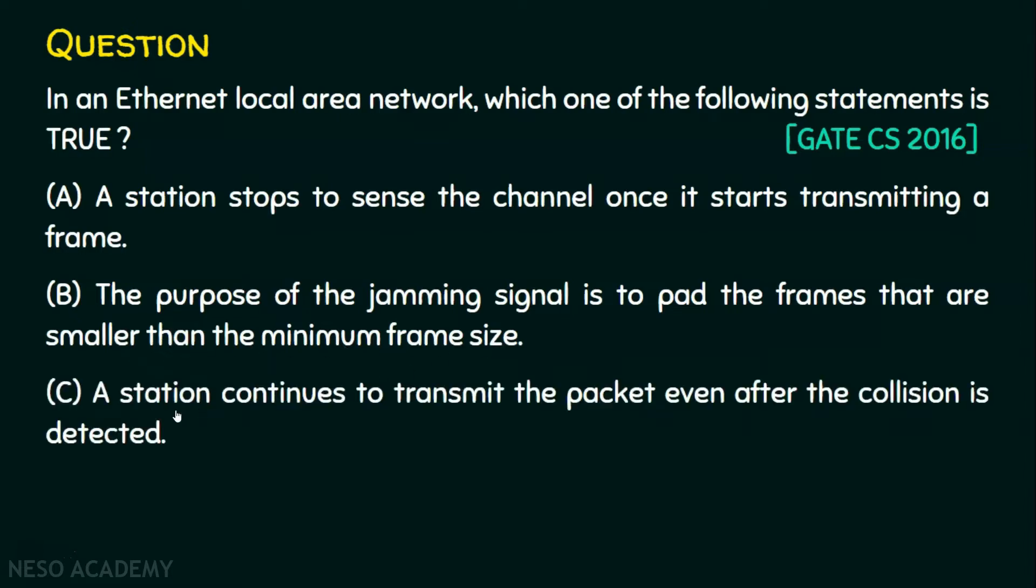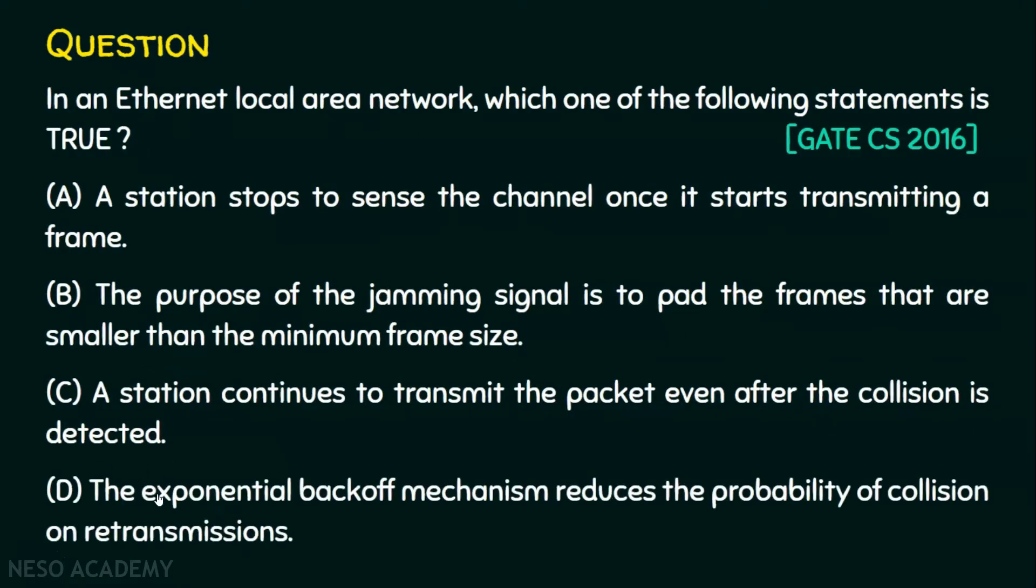Option C: A station continues to transmit the packet even after the collision is detected. And option D: The exponential backoff mechanism reduces the probability of collision on retransmissions.